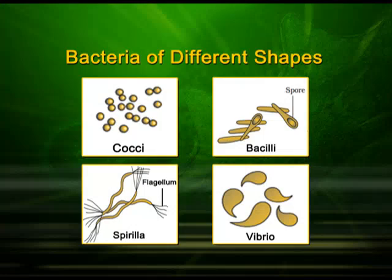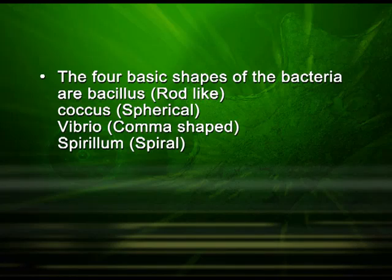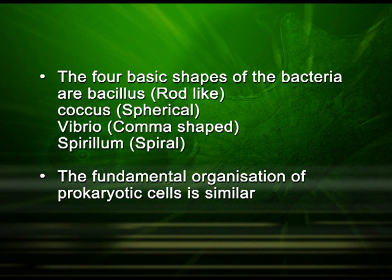The prokaryotic cells also exhibit a variety of shapes and functions. Bacteria of different shapes include: the cocci, which are spherical; the bacilli, which are rod-like; the spirilla, which are spiral in shape; and the vibrio, which are comma-shaped. These are the four basic shapes of bacteria. The fundamental organization of prokaryotic cells is similar amongst them.